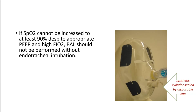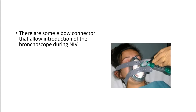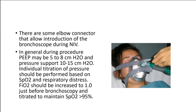If SpO2 cannot be increased to at least 90% despite appropriate PEEP and high FiO2, BAL should not be performed without endotracheal intubation. A modified full-face mask with synthetic cylinder sealed by disposable cap can allow introduction of the bronchoscope without increasing the amount of leak. During the procedure, PEEP may be 5–8 cm H2O and pressure support 10–15 cm H2O. Individual titration of pressure should be performed based on SpO2 and respiratory distress. FiO2 should be increased to 1.0 just before bronchoscopy and titrated to maintain SpO2 greater than 95%.